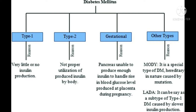In Type 2, we are able to reduce weight through exercise. Because of lifestyle factors, the body is not taking up insulin properly, but when we get slim with the help of exercise, the condition improves. That's why Type 2 diabetes is not as serious as Type 1.